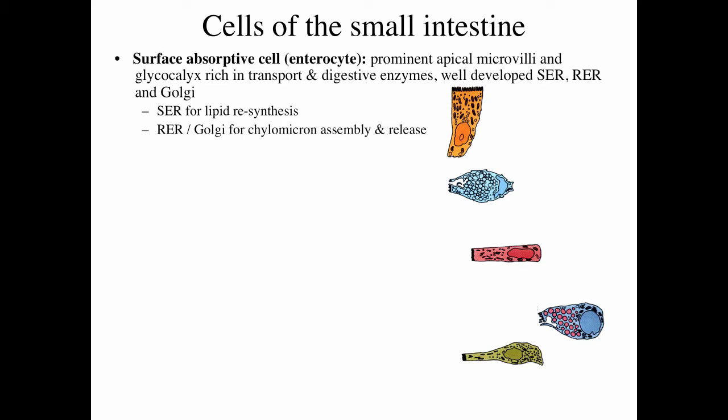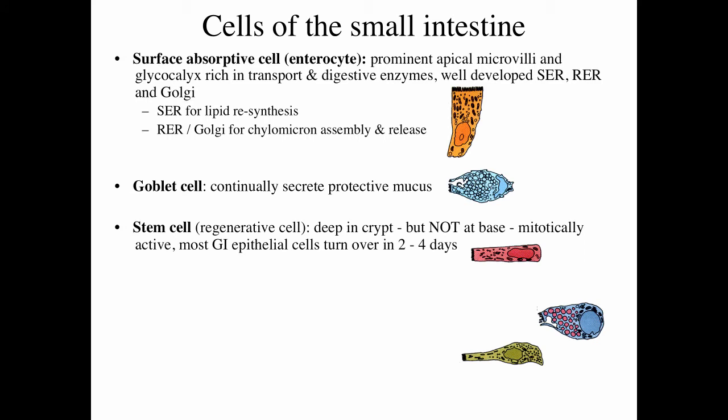Looking at the cells of the small intestine: the surface absorptive cell, also called an enterocyte, has prominent apical microvilli and a glycocalyx. These cells are rich in transport and digestive enzymes with a well-developed rough and smooth ER and Golgi complex. The smooth ER is for lipid re-synthesis and chylomicron production; the rough ER and Golgi are for chylomicron assembly and release. Goblet cells continuously secrete a protective mucus on the epithelial surface. Stem or generative cells are deep in the crypts of Lieberkühn and are mitotically active; most GI epithelial cells turn over in two to four days.